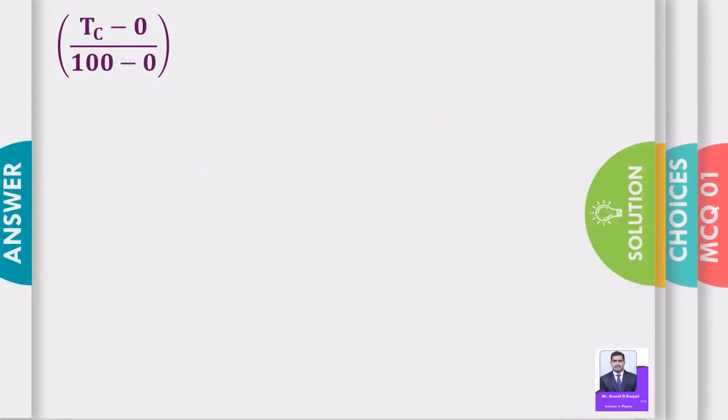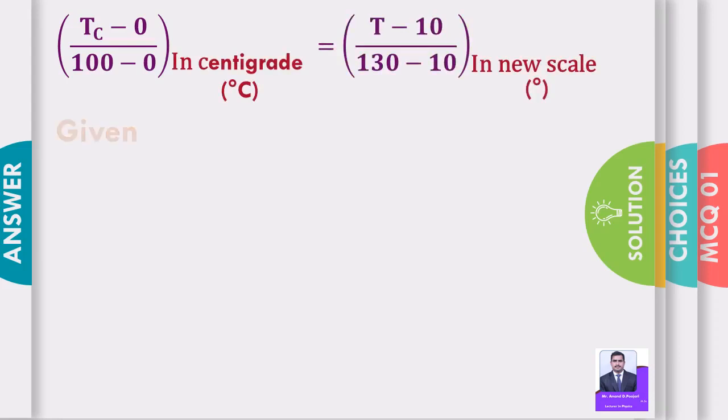Tc minus 0 by 100 minus 0 in centigrade scale is equal to T minus 10, 130 minus 10 in new scale.